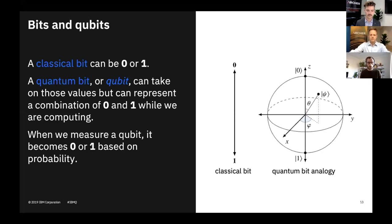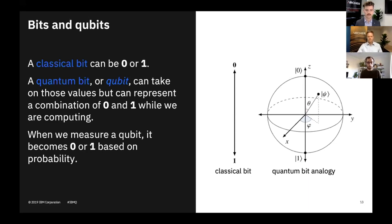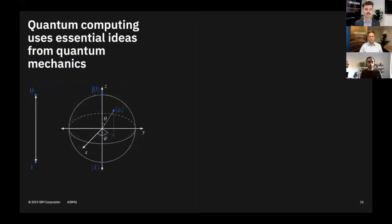A quantum computer runs very similar to flipping a coin — when it lands on a result, it could be heads or tails, zero or one. It's probabilistic. To get the right probability distribution with a coin, we flip it maybe a thousand times and get roughly 500 heads and 500 tails. That distribution tells us the most likely outcome. When we run a quantum computer, same idea — we run the computation 1000 times so that the qubit lands on the most likely outcome. The most frequent outcome is the true result. So it's probabilistic in nature, which makes it very different to classical machines.